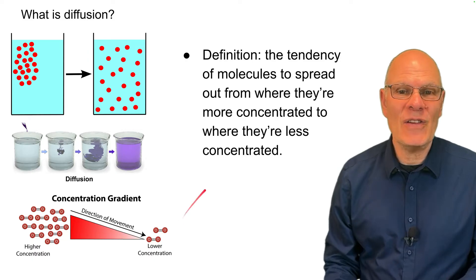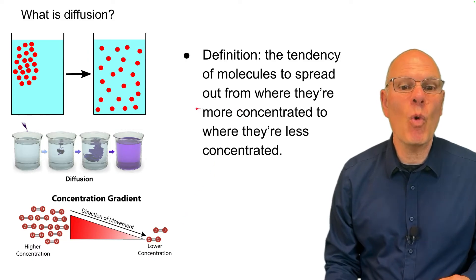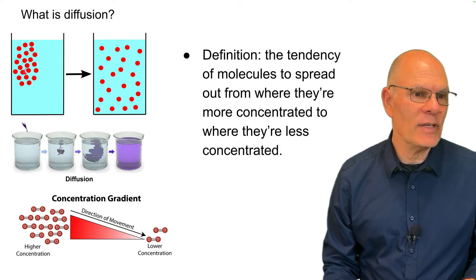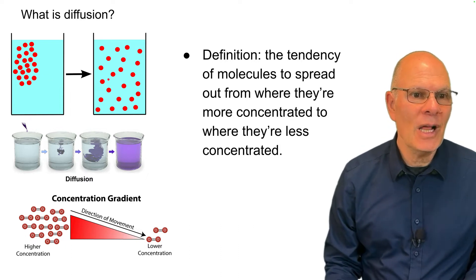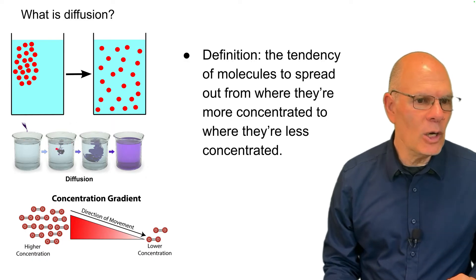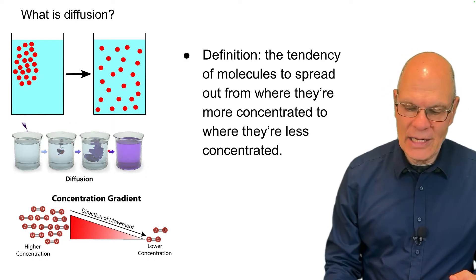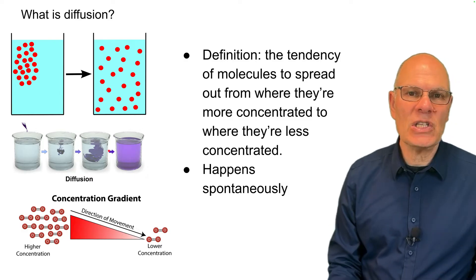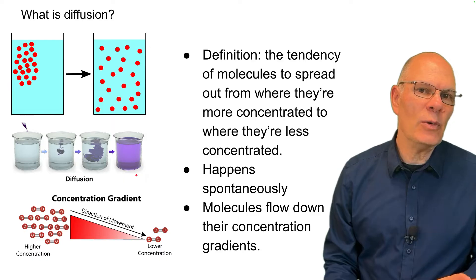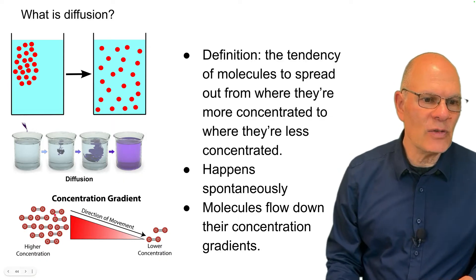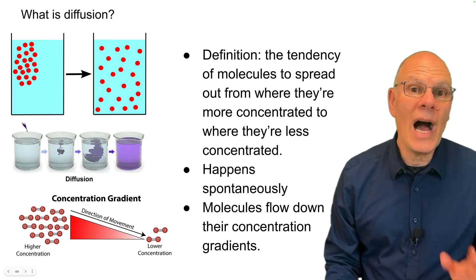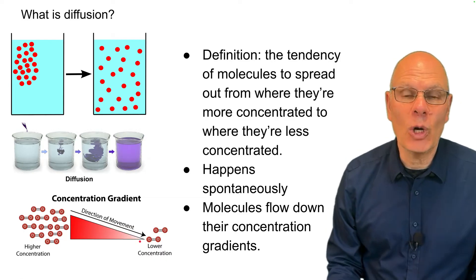Diffusion is the tendency of molecules to spread out from where they're more concentrated to where they're less concentrated. Here you have some substance more concentrated over here, less concentrated over here — like ink going into a beaker. This happens spontaneously, based on the kinetic energy of the molecules. Think of molecules as flowing down a concentration gradient from higher concentration to lower concentration.